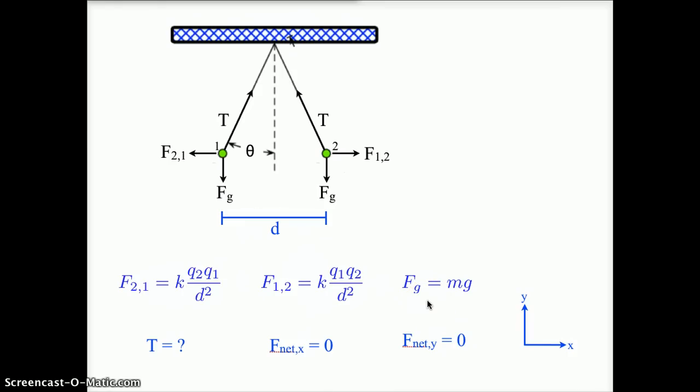The force of gravity is mass times little g. We do not know the force of tension, but we do know that the net force in the x direction and the net force in the y direction are both zero because everything is at rest.